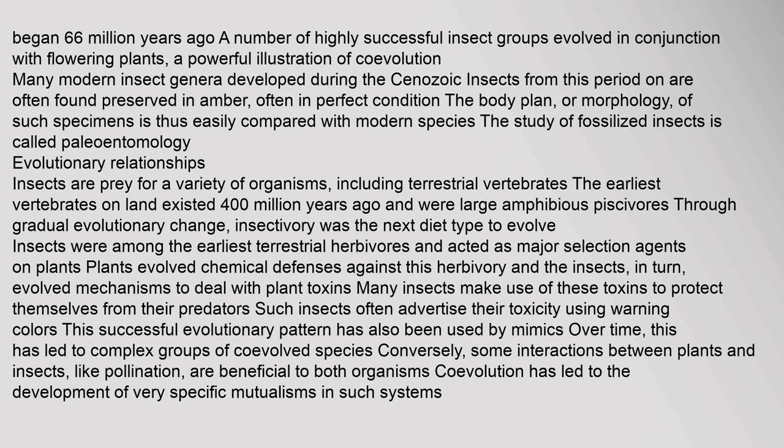Insects are prey for a variety of organisms, including terrestrial vertebrates. The earliest vertebrates on land existed 400 million years ago and were large amphibious piscivores; insectivory was the next diet type to evolve. Insects were among the earliest terrestrial herbivores and acted as major selection agents on plants. Plants evolved chemical defenses against herbivory, and insects in turn evolved mechanisms to deal with plant toxins. Many insects use these toxins to protect themselves from predators and often advertise their toxicity using warning colors. Some interactions between plants and insects, like pollination, are beneficial to both organisms.